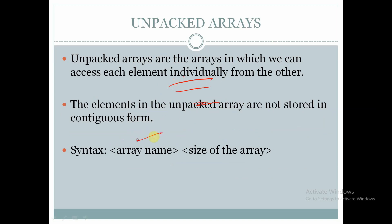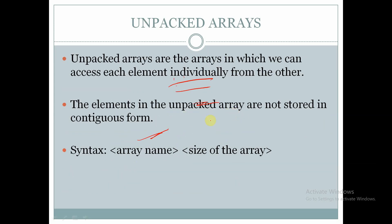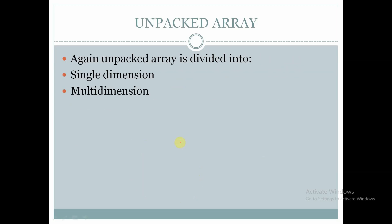The elements in the unpacked array are not stored in contiguous form, whereas in packed arrays the elements are stored in contiguous form — all three elements are stored in the same row of memory. In unpacked arrays, the elements are not stored in contiguous form. The syntax of the unpacked array places the size of the array after the array name, whereas in packed arrays the size is placed before the array name. This is the key difference between packed and unpacked arrays.